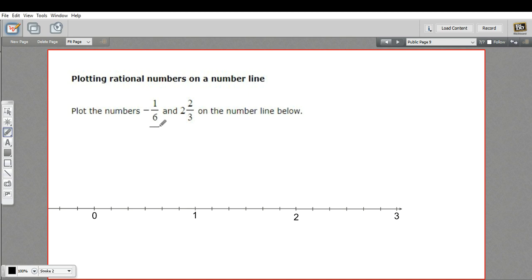So plotting negative 1 sixth should be pretty easy. What I need to do is start at 0, and because it's a negative number, I need to count in this direction. It's only 1 sixth, so it's just going to be here. So this is negative 1 sixth.